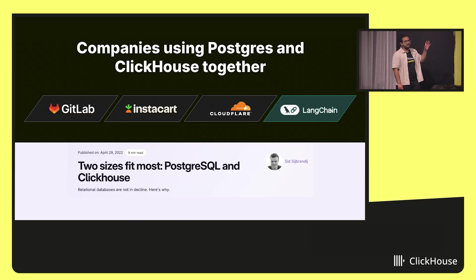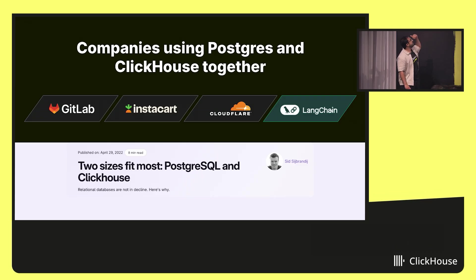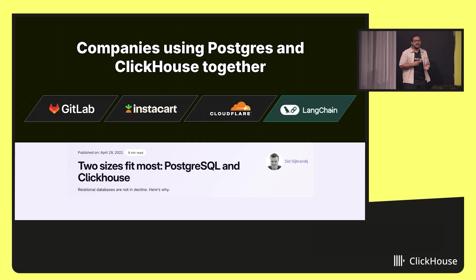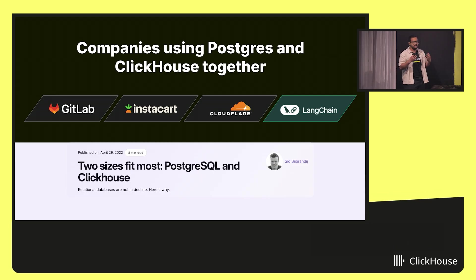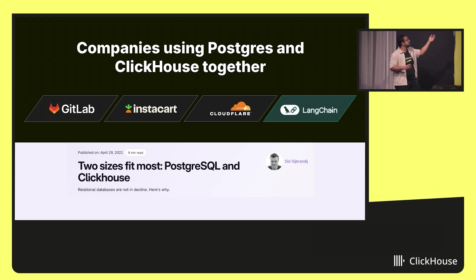This architecture is being validated by multiple companies across the globe. You have companies like GitLab, Instacart, and Cloudflare who use Postgres and ClickHouse together to solve most of their data challenges. You also have fast-growing AI companies like Langchain, Langfuse, Wappy, and Suvar AI who are using them together. I love this blog post by the co-founder of GitLab, Sid, who talks about how two sizes fit most — which is Postgres and ClickHouse.